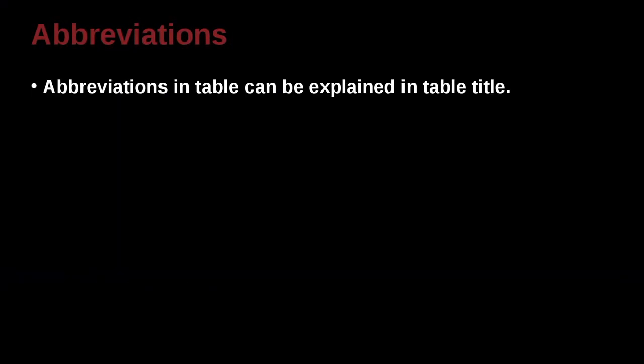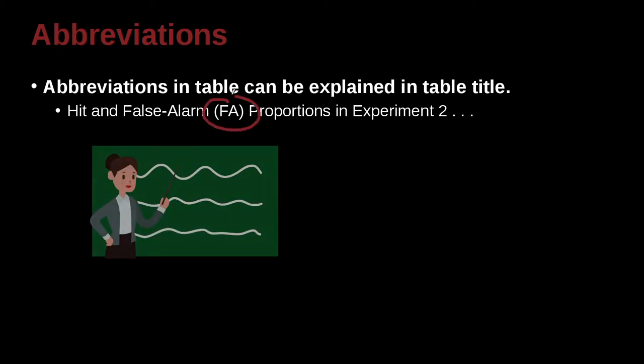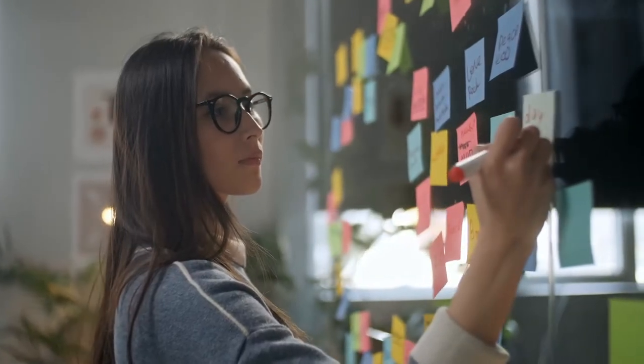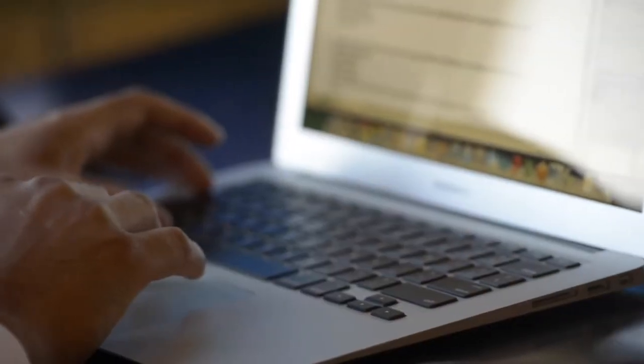Abbreviations in tables can be explained in the table title. So if you have an abbreviation in your table, for example here, FA, hit and false alarm proportions in experiment 2. This is a title of a table, and inside the table we have FA. What is FA? Well we go ahead and we explain it inside of the title. Now we could do it in a note.